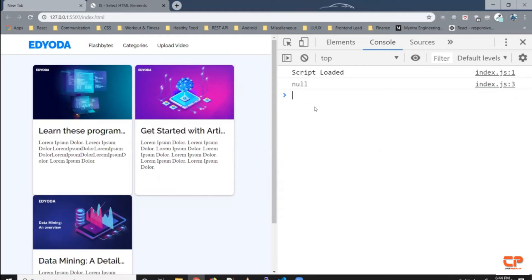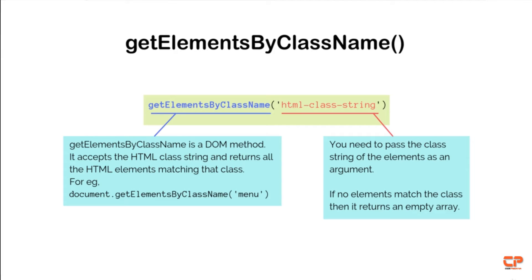That's why we were getting null earlier — because the elements weren't loaded in the DOM tree, and when we tried getElementById it couldn't find those elements and returned null. Now let's try selecting elements by class. For that we have another method called getElementsByClassName, which accepts a class string and returns all HTML elements with the class matching that string.